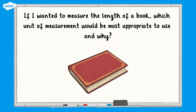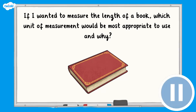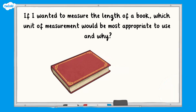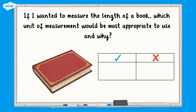Now let's consider which units of measurement would be most appropriate to use. For example, if I wanted to measure the length of a book, which unit would be most appropriate and why? When measuring the length of a book, sensible units would be millimetres or centimetres. Other units such as kilometres are too great to represent such short distances in a practical way.